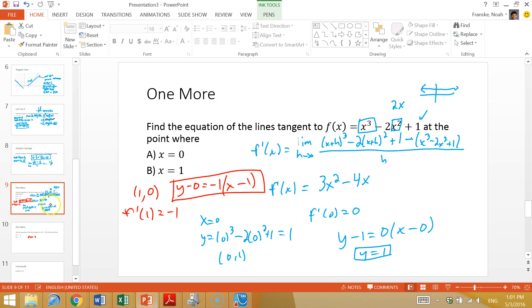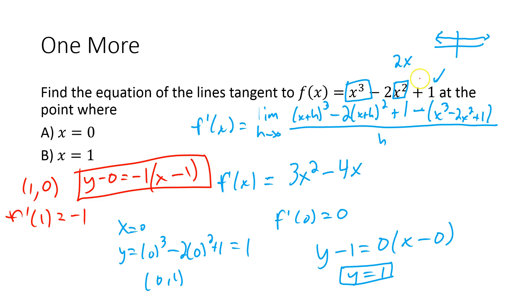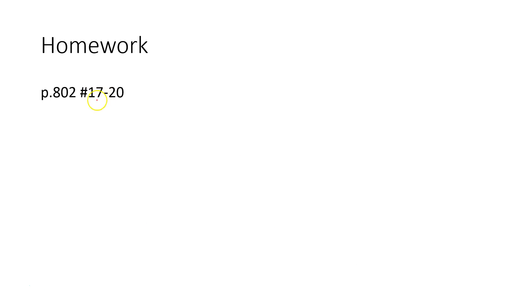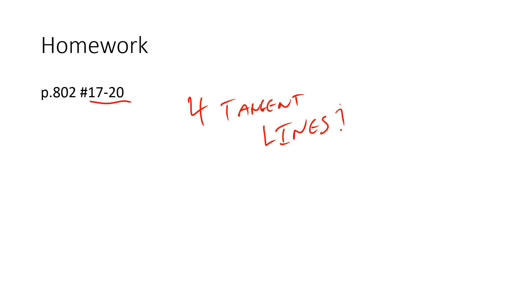Finding tangent lines is a multi-step process: find the derivative, use that derivative equation, then plug in the important point values to get the equation for the line. Point-slope form combined with the derivative is the key skill for this lesson. Homework is page 802, problems 17 through 20 — just four tangent lines, a great way to get the hang of it. Love you guys, have a great day and I'll see you in class.